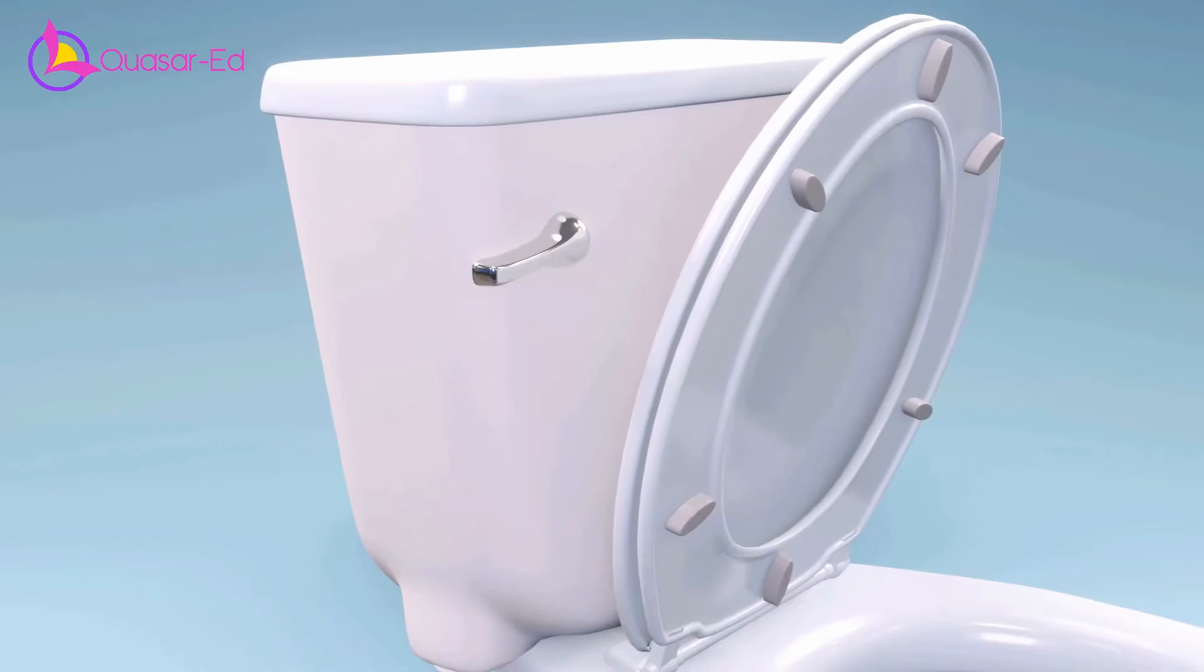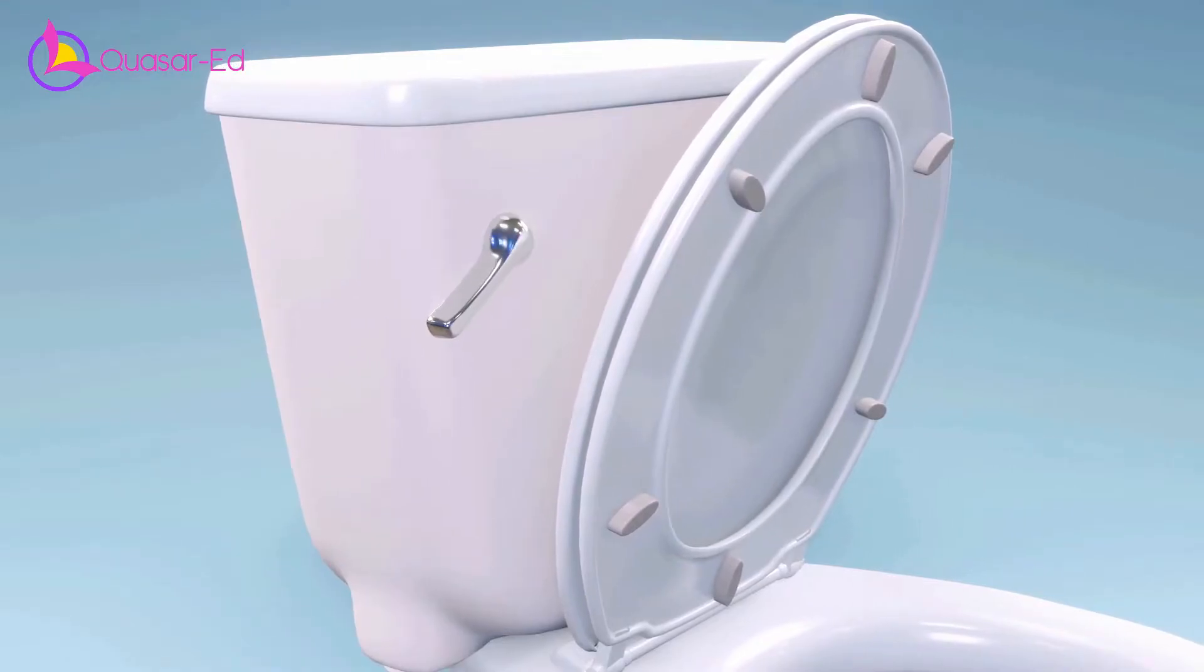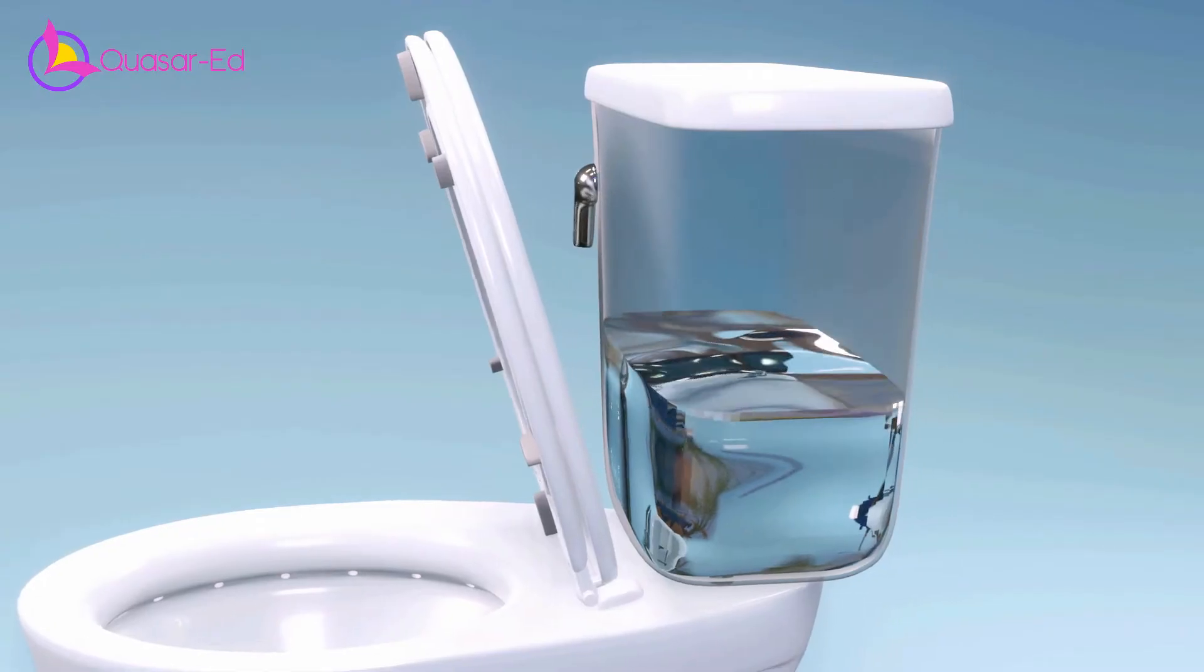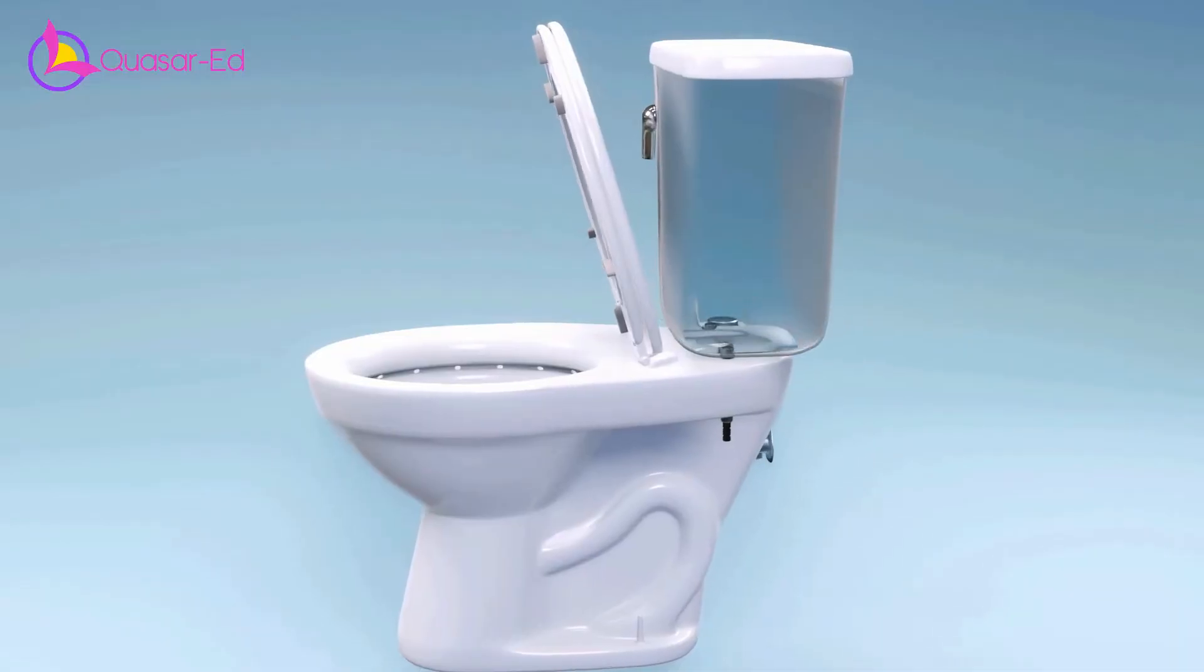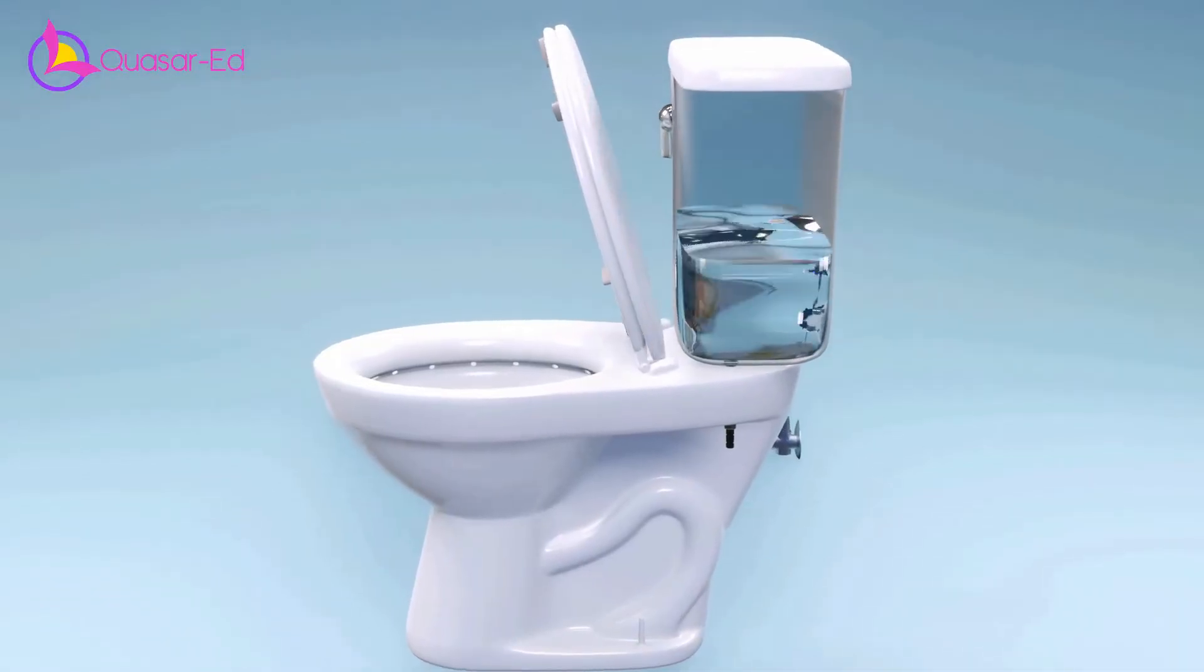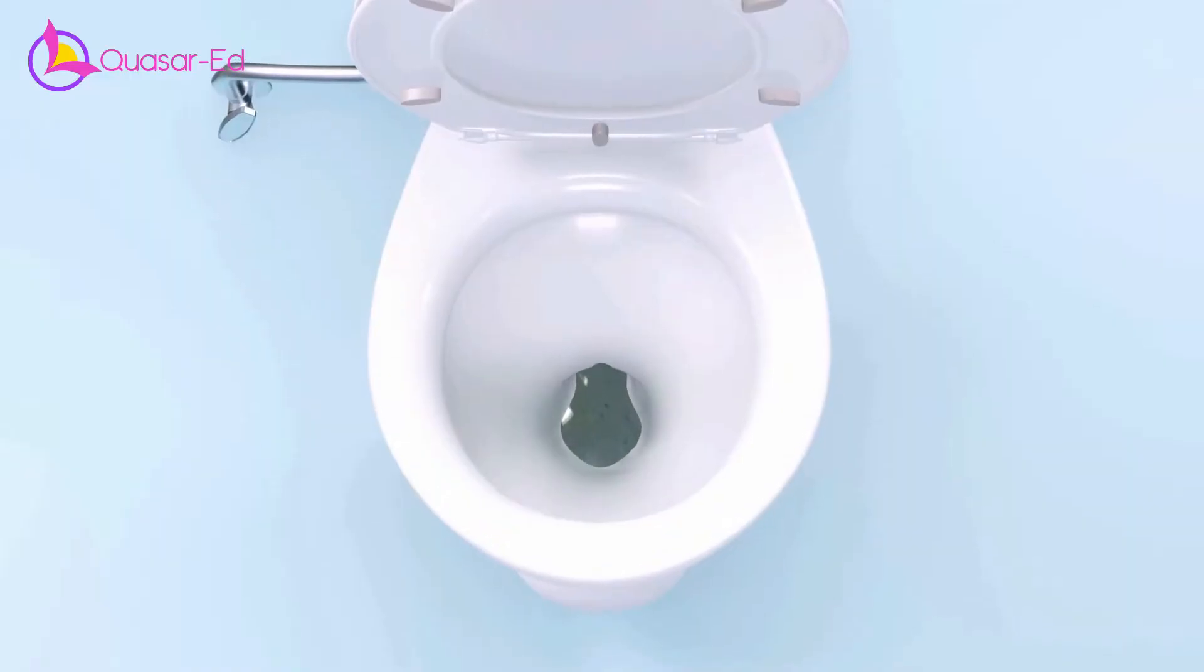After you finished, pull down the flush switch and all the water in the tank will flow down, bringing everything you put in the bowl. When the tank gets empty, water will fill automatically. The bowl will also be filled with little bit of water.